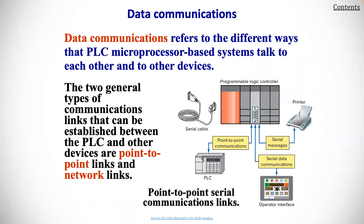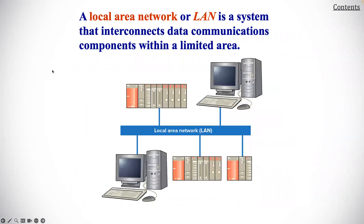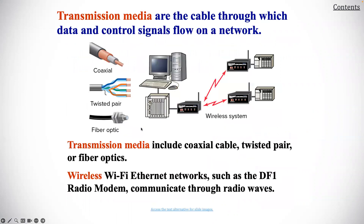Point-to-point serial communication links are shown in this figure. A local area network, or LAN, is a system that interconnects data communication components within a limited area. Transmission media are the cables through which data and control signals flow on a network. Transmission media includes coax cable, twisted pairs, or fiber optics.